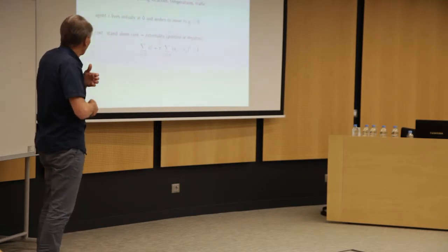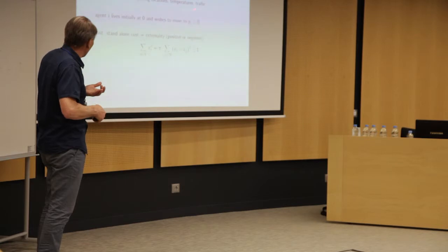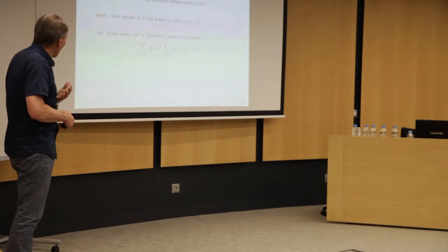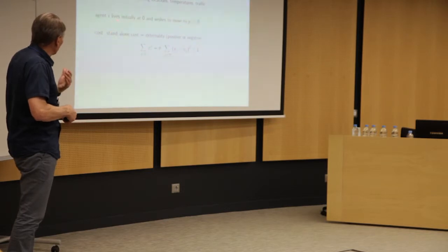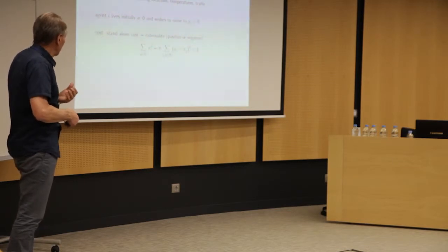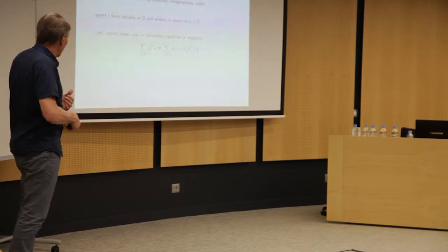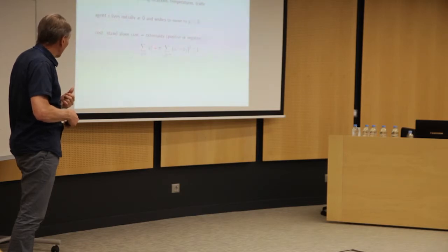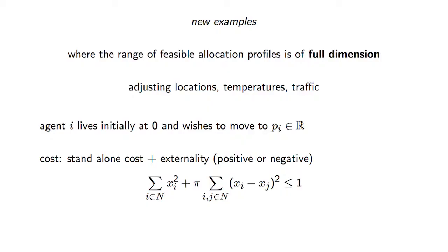So now it's natural to ask also about full dimension and that's, you could have a story like this one. We are basically, here it's a kind of a bargaining situation where we are choosing locations on the line. And agent i would like to go to a location p_i, which could be positive or negative. And then there is a budget allowed, a total budget to cover those moving costs.